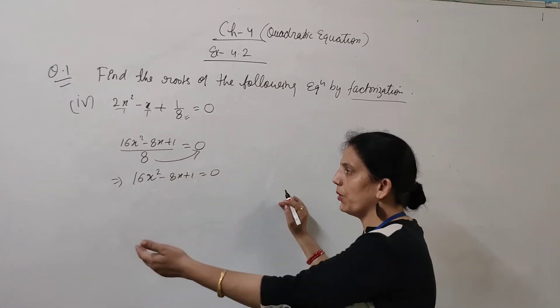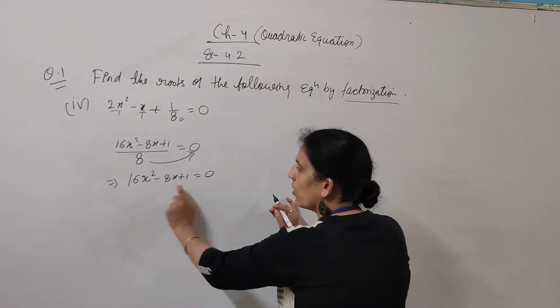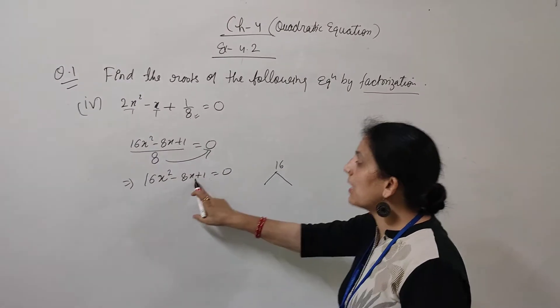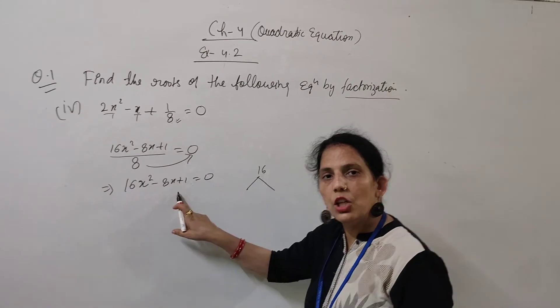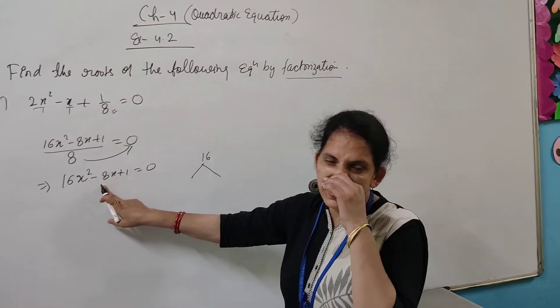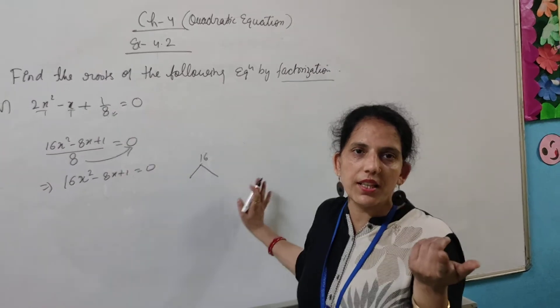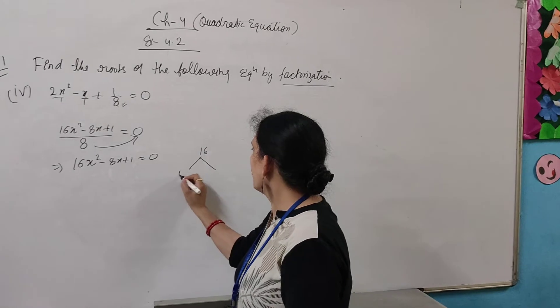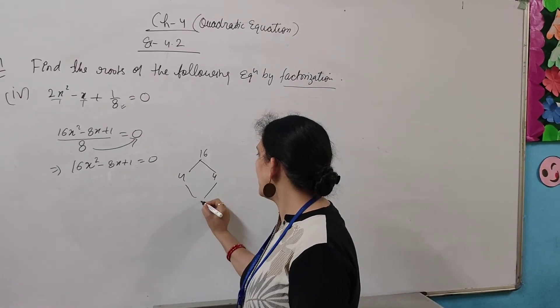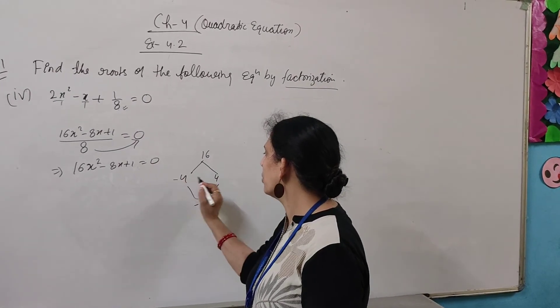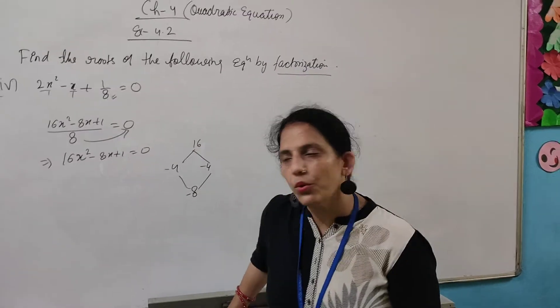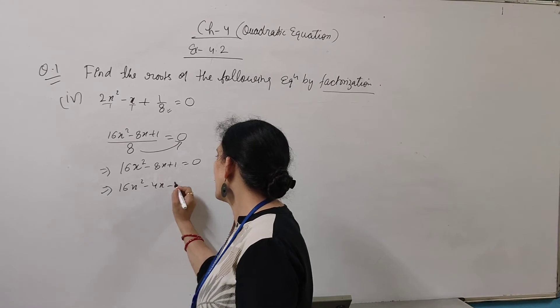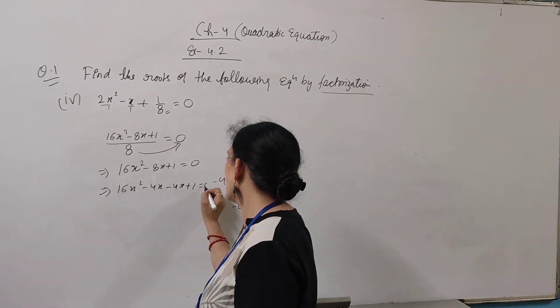So it will be 16x² - 8x + 1 = 0. Same procedure - multiply a and c, which is 16. What are the factors of 16 whose sum is... both are positive, so sum is minus 8. So what factors of 16 can there be? 4 times 4 is 16, because 4 plus 4 is 8. But how do we take both? Minus 4 each. 4 plus 4 is 8. So here it will be 16x² - 4x - 4x + 1 is equal to 0.